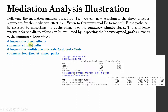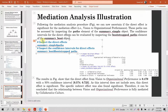Let's briefly discuss this theory. Following the mediation analysis procedure, we can now ascertain if the direct effect is significant — that is, whether the mediation is partial, complete, or full. Now that we know the indirect effect is significant, we need to know whether the direct effect from vision to organizational performance was significant or not. If both paths are significant, this is partial mediation. However, if the direct path is insignificant, this is full mediation.